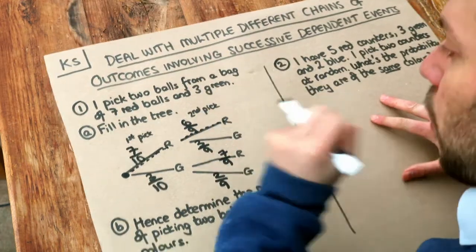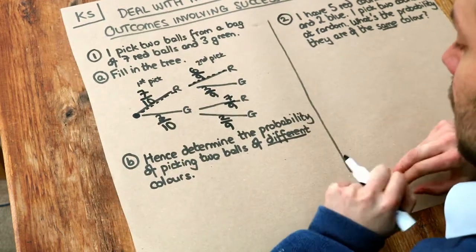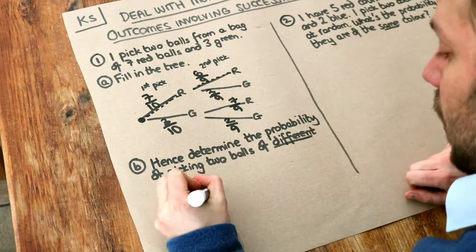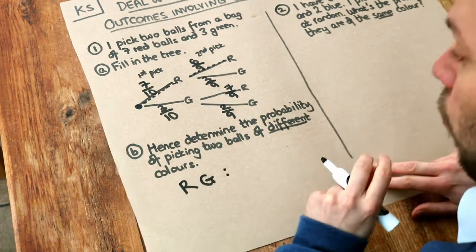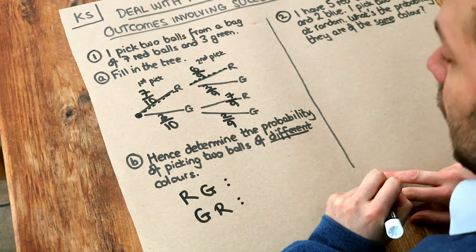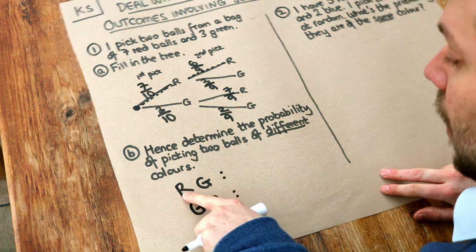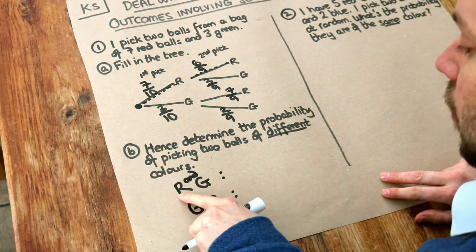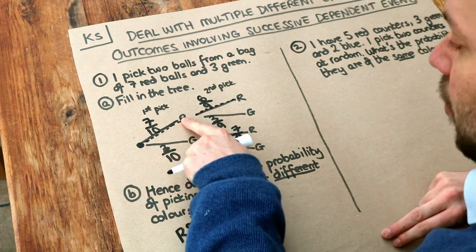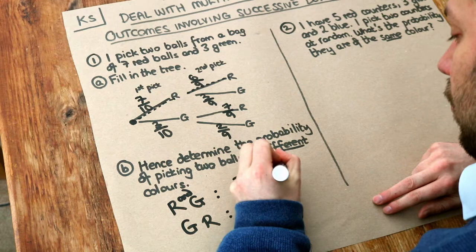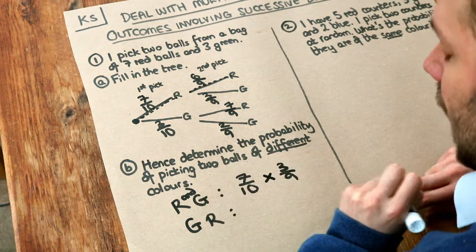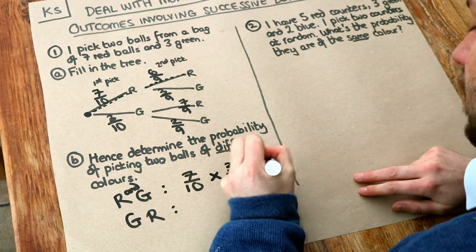As implied by this title, there are multiple different sequences of outcomes where we'd have balls of different colours. We could have red on the first pick and green on the second, or green on the first pick and red on the second — in both cases we have two balls of different colours. The probability that the first ball is red and the second pick is green: probability of red first is seven tenths, then following that path, it's three ninths probability of the second being green. Since we use the word 'and', we multiply: seven tenths times three ninths equals 21 over 90.